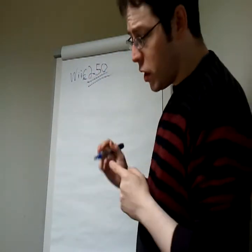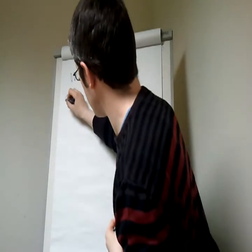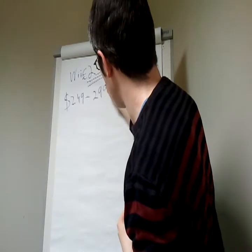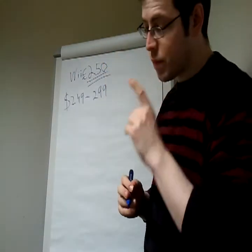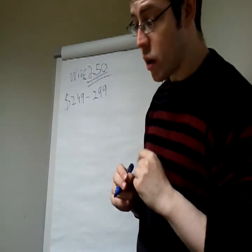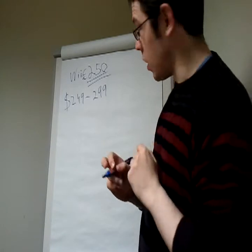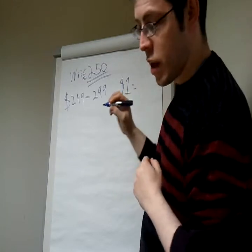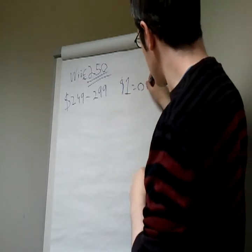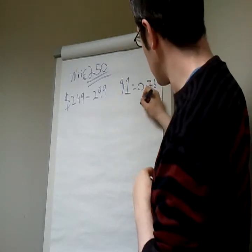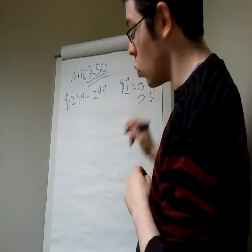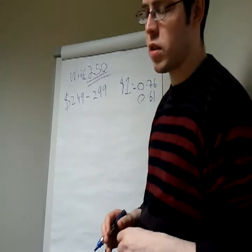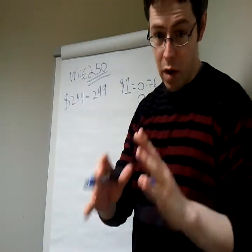Now, we know that the Wii U is going to cost $249 to $299. That's grand. And we also know that the conversion rate for dollars is $1 equals around 0.76 EUR or 0.61 sterling. It's going to vary a bit over time, but it's usually in or around that. Certainly that's what it is around now.